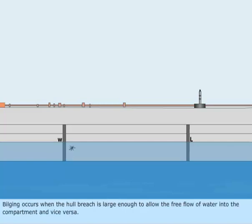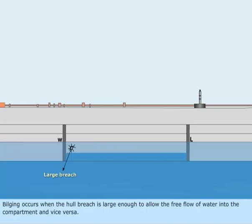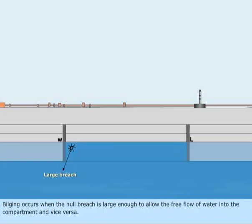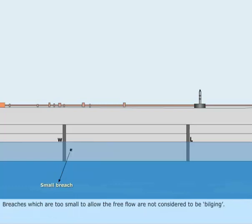Bilging occurs when the hull breach is large enough to allow the free flow of water into the compartment and vice versa. Breaches which are too small to allow the free flow are not considered to be bilging.